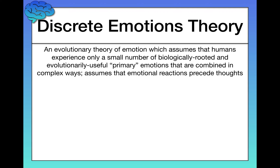I want to unpack two key parts of that definition — 'biologically rooted' and 'evolutionarily useful.' Biologically rooted means these primary emotions are innate; everybody is born with them and they're universal — no matter where you're from, what time period you're in, every human has and always will have this set of primary emotions. Second, the theory assumes these emotions are evolutionarily useful, meaning they help keep us alive. Think about an emotion like fear, which is a primary emotion according to the theory.